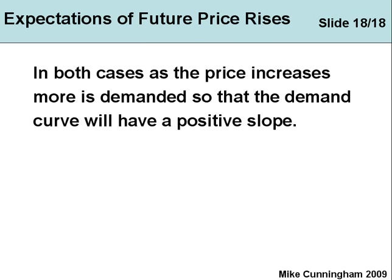So in this session we've looked at three types of good where the demand curve could be upward-sloping: the Giffen Good, the Snob Good which is also known as the Veblen Good, and the last situation — expectations of future price rises. That should explain the exceptions. I hope that was useful, thank you for watching.